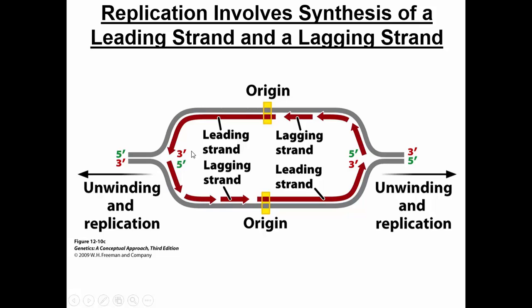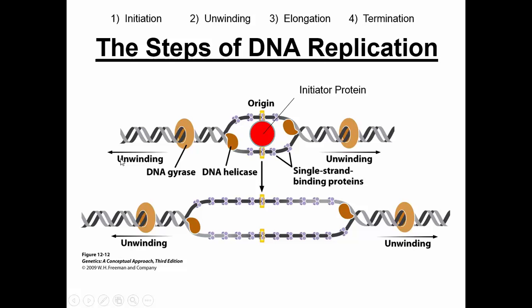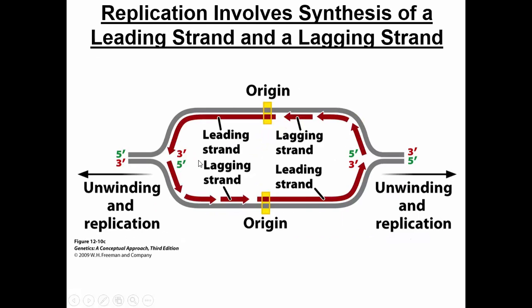The problem is that the whole replication bubble is opening to the left. The first DNA that polymerase has access to is the DNA that had been opened first. That's why you run into this problem on the lagging strand: you can't have DNA replicate continuously in the direction the fork is going. Instead, DNA polymerase hops on and forms short little fragments of DNA being replicated in the opposite direction, and those fragments are called Okazaki fragments.